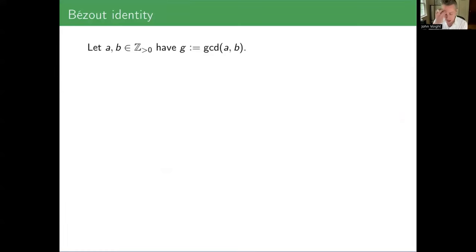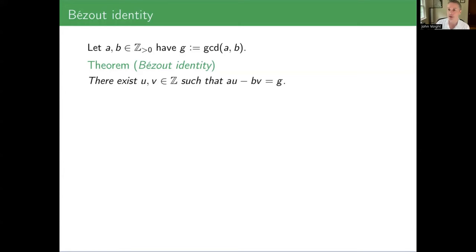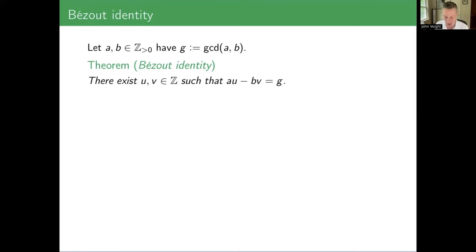Well, in the beginning, there are two positive integers A and B. We let their GCD be G. And the theorem, which is referred to as the Bézout identity, says that there exist integers U and V with the property that A times U minus B times V is equal to G. I can think of no better way to start a Number Theory Web Seminar. I've tried to reach out and imagine what our summers could be like, and I'll try to keep that tone throughout the talk.